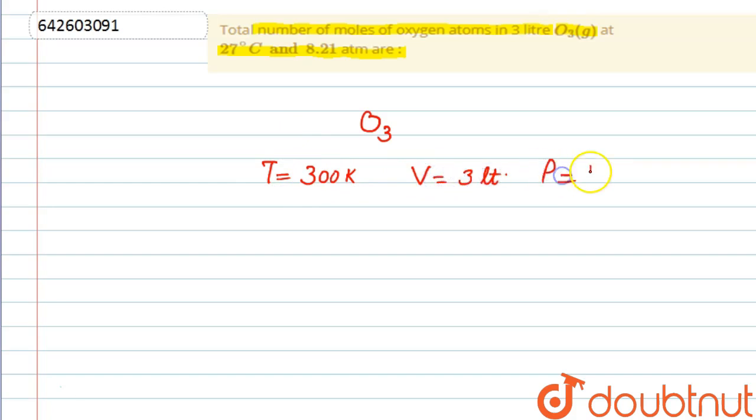Pressure is 8.21 atmosphere and we have to find the number of moles of oxygen atoms. We will use the ideal gas equation PV = nRT. We will fill the values: pressure is 8.21 atmosphere and volume is 3 liter, and we have to find the number of moles of O3.